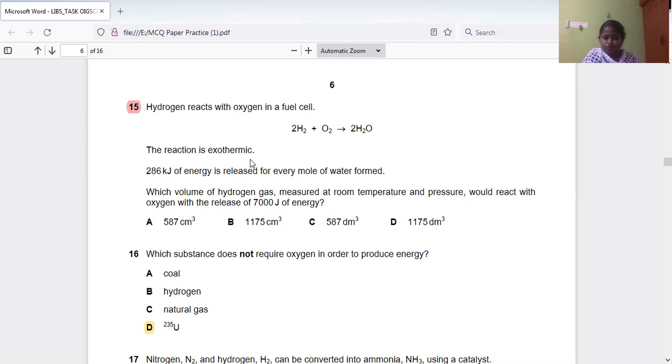The reaction is exothermic. 286 kJ of energy is released for every mole of water formed. Which volume of hydrogen gas measured at room temperature and pressure would react with oxygen with the release of 7000 J of energy?